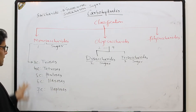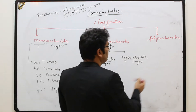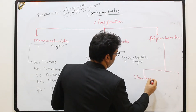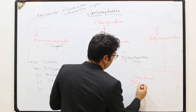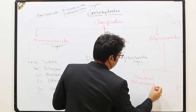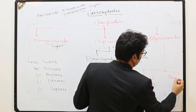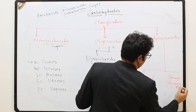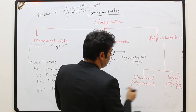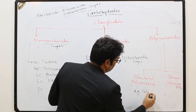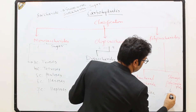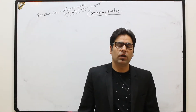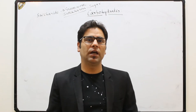Before going through examples, let me complete the classification. Polysaccharides have two types: number one is structural polysaccharides — for example, cellulose — and number two is storage polysaccharides — for example, starch and inulin. So we have now covered the general classification of carbohydrates.